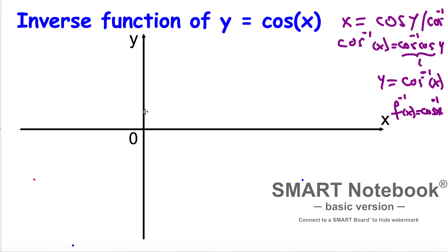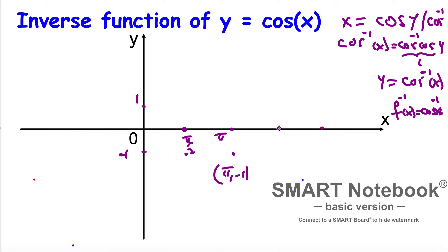Let me take some critical points. Here is 1 and here is minus 1. Here is π over 2, here is π, 3π over 2, and 2π. So the key points are: (π over 2, 0), (π, −1), (3π over 2, 0), and (2π, 1).